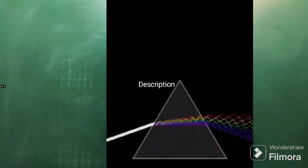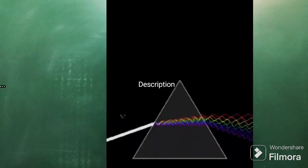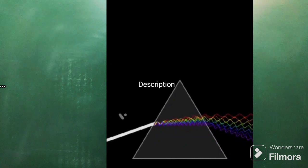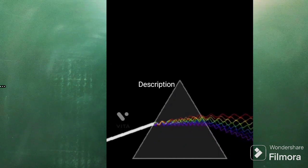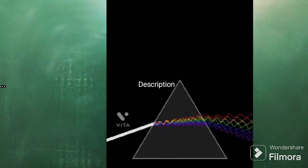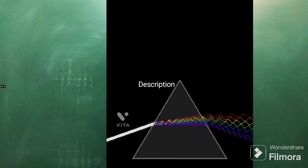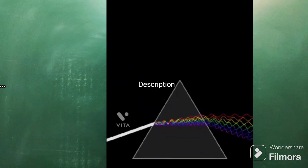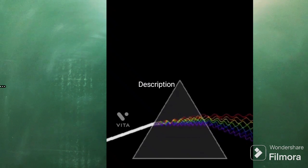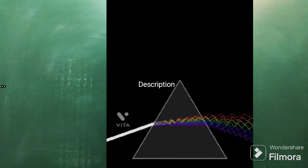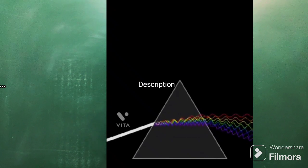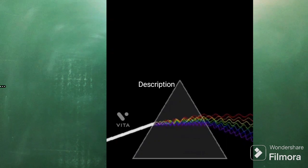In dispersion, the color having the least wavelength — violet — bends the most. The color having the maximum wavelength — red — bends the least. So the angle of deviation is greatest for violet light and least for red light.